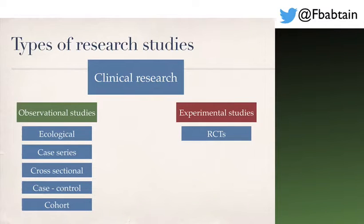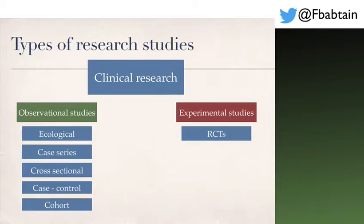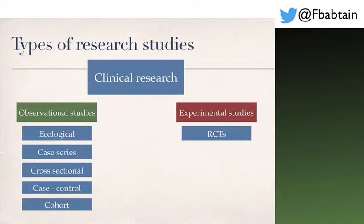I will give some brief examples of these types of clinical research for you to understand them. Observational studies can be ecological, case series, cross-sectional, case-control, and cohort studies, while experimental studies are the randomized controlled trials. You would need more dedicated lectures to go through the pros and cons of each.